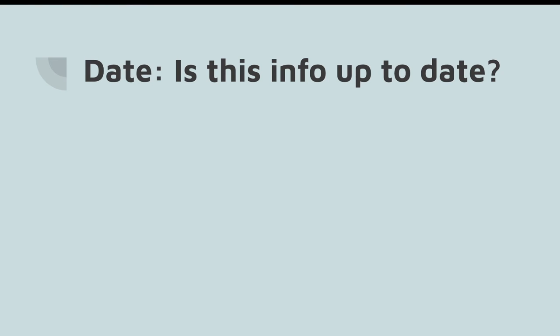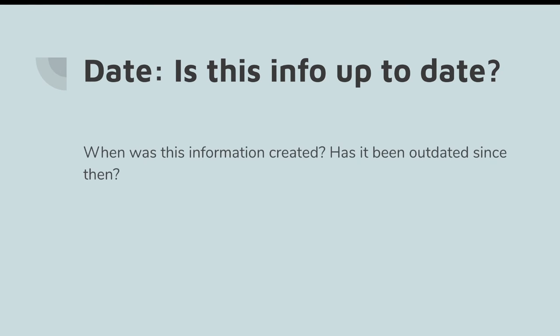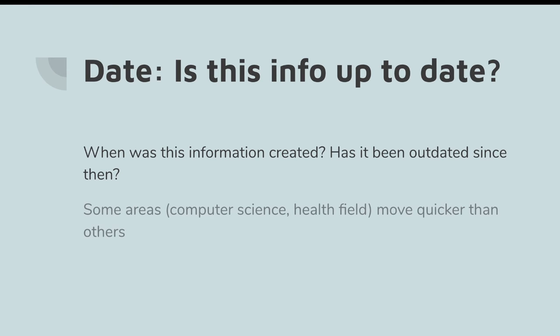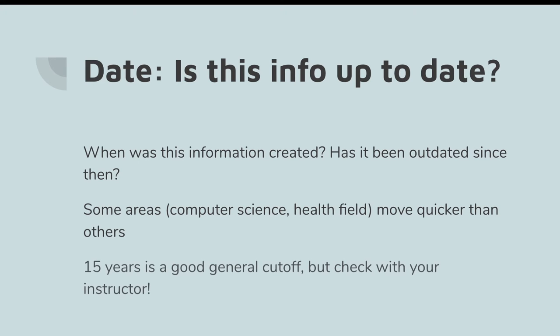Publication date. When was this information created or last updated? Have there been newer discoveries since that time that might make this source outdated? Think of a source on the use of social media written in 2010 — that's only 10 years, but a lot has changed. Different subjects will have different cutoff dates, but in general, if you're going older than 15 years, you should have a good reason, such as presenting a historical perspective on a topic, or that it's an area that hasn't changed much in that time.